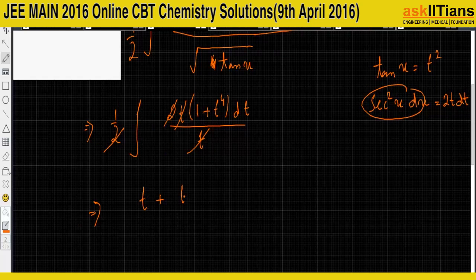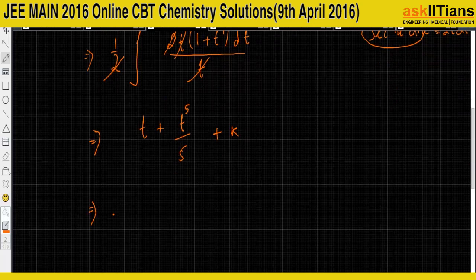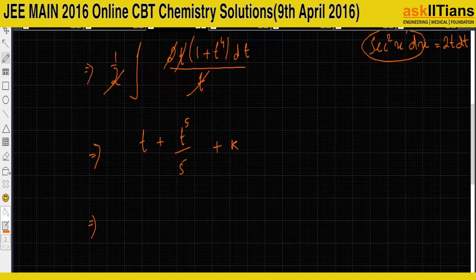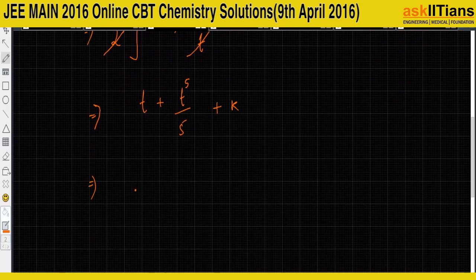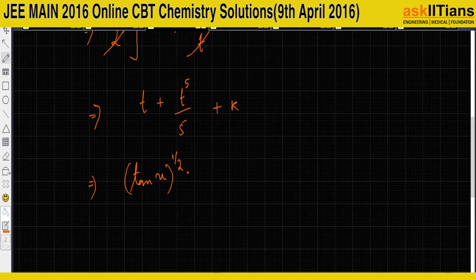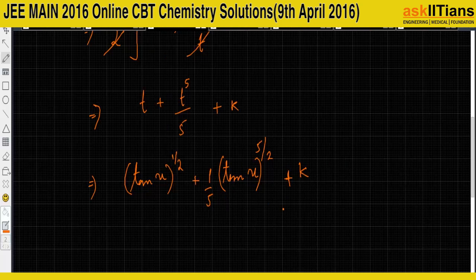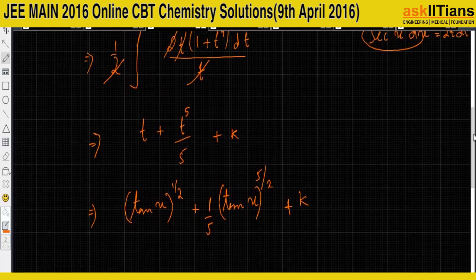Integrating (1 + t⁴) dt gives t + t⁵/5 + k. Since t = √(tan x) = tan(x)^(1/2), substituting back gives tan(x)^(1/2) + tan(x)^(5/2) / 5 + k.